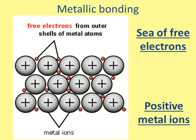So just to recap, your metal or all metals are made up of a sea of free electrons, and what's left behind are your positively charged metal ions.